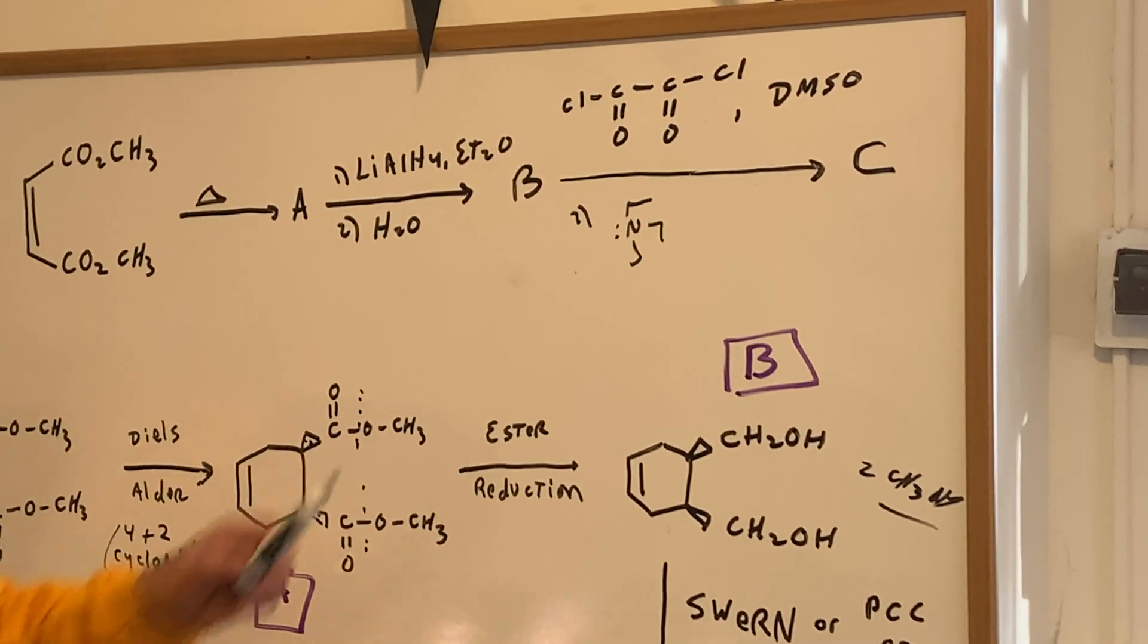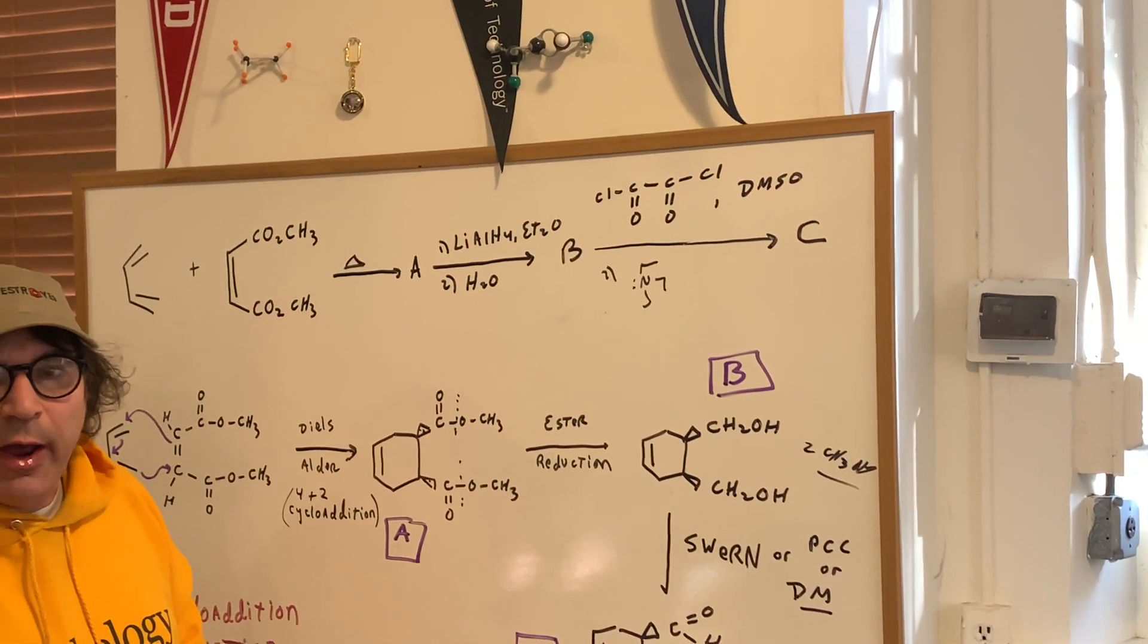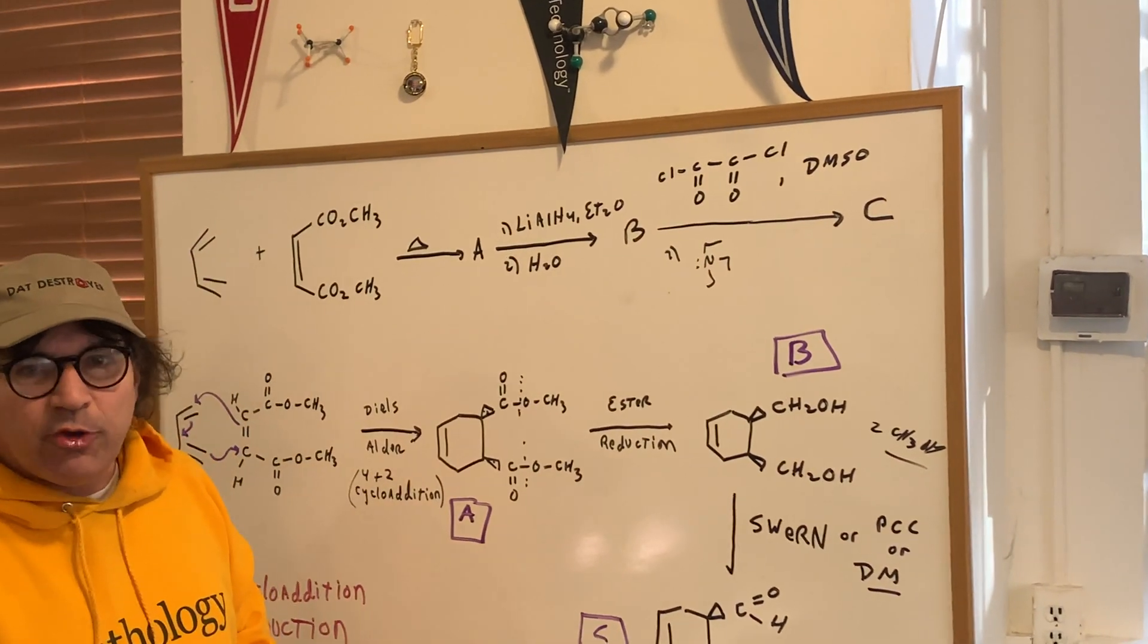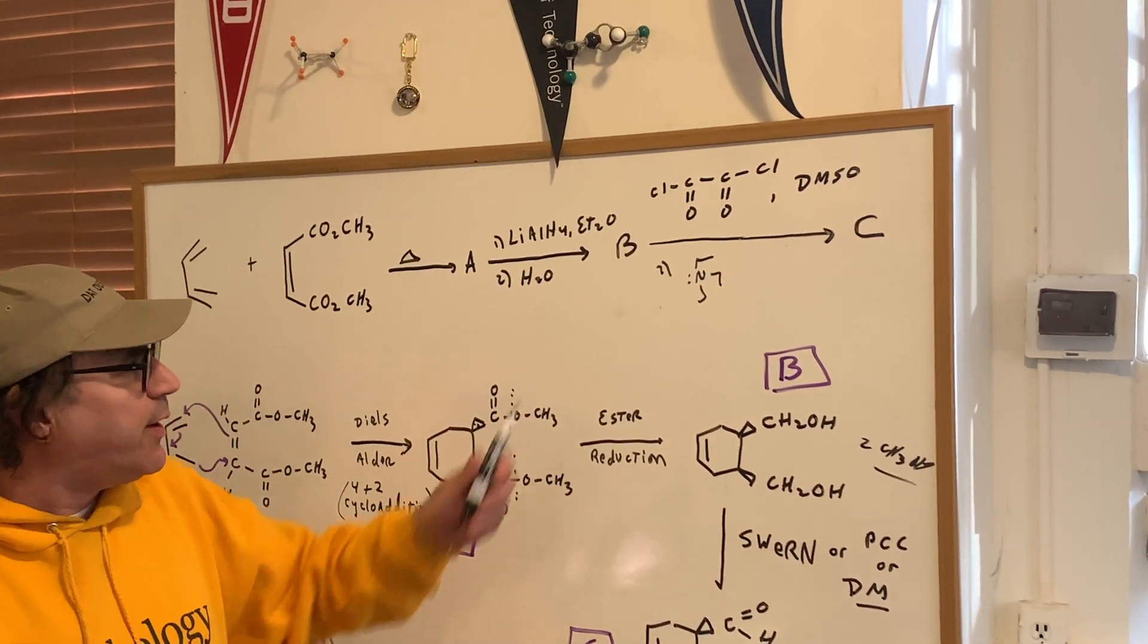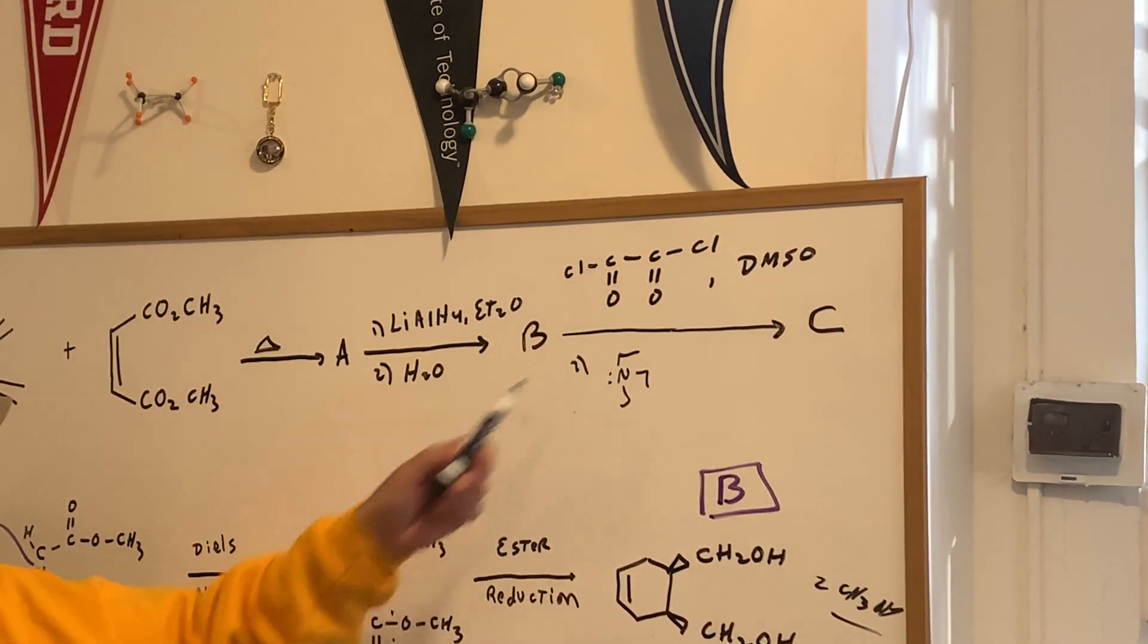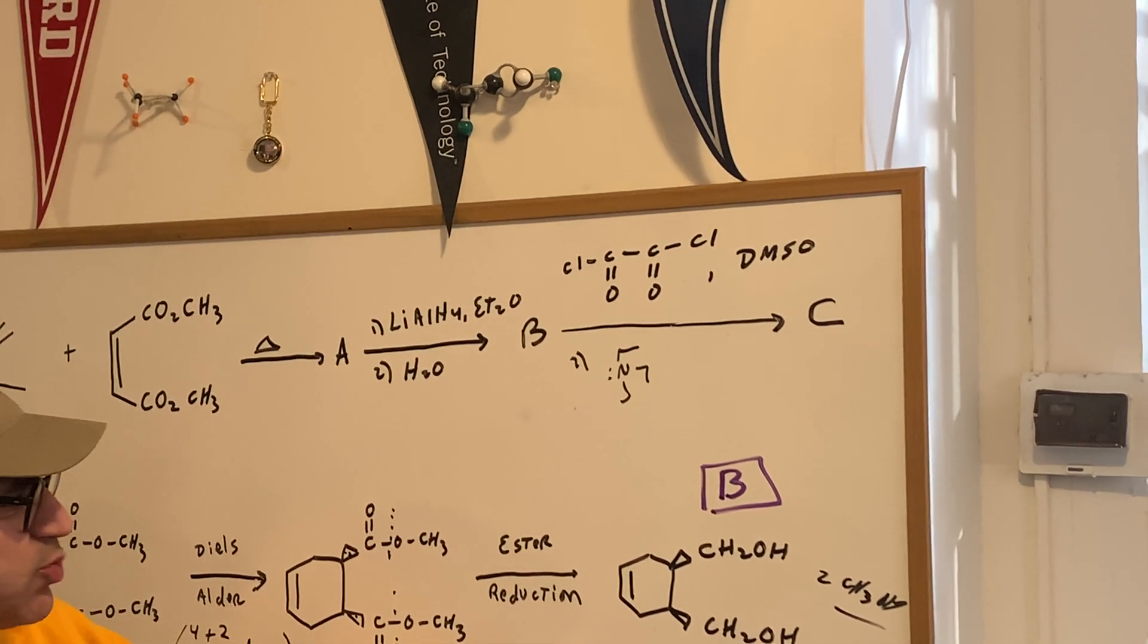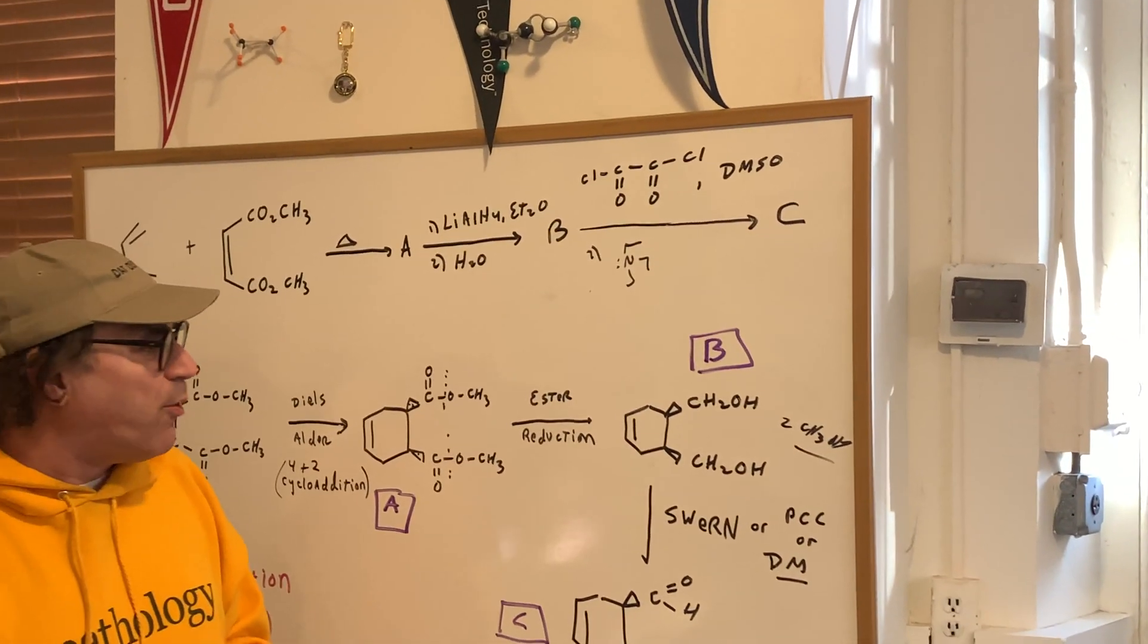Now, what the hell is this reagent? This reagent is called oxalyl chloride. You got this in the brand new issue with the Destroyer book. It's very important. This oxalyl chloride with DMSO treated with an amine, a tertiary amine as cleanup base, is known as the Swern oxidation. It's a very important reaction.